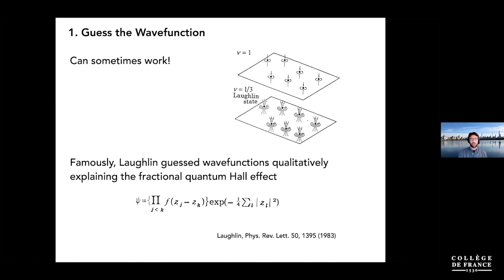One approach that can occasionally work — and happened with tensor networks back in the eighties — is to intuit or guess the wave function in certain special cases. The most famous case is the fractional quantum Hall effect, where you can write the wave function as a beautiful complex function of parameters encoding locations of excitations. Another example is the AKLT state, where you can exactly write down a tensor network encoding a certain interesting many-body state.